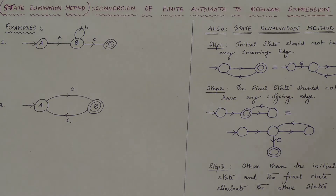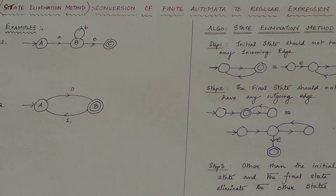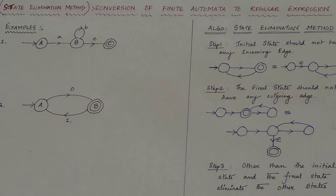So we will be discussing two different techniques — algorithms or methods — by which you will be able to convert a finite automata to a regular expression. The first method we will look into is known as the state elimination method, where we get a regular expression by eliminating the states one after another, keeping only the initial and the final state. Let us start with the algorithm steps.